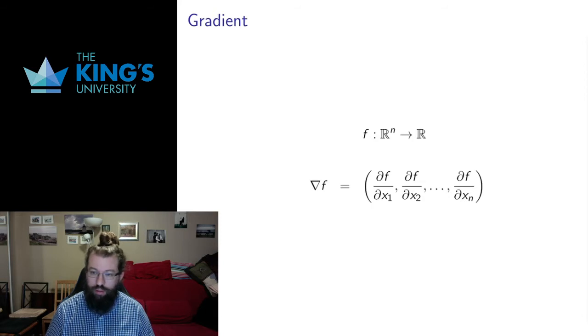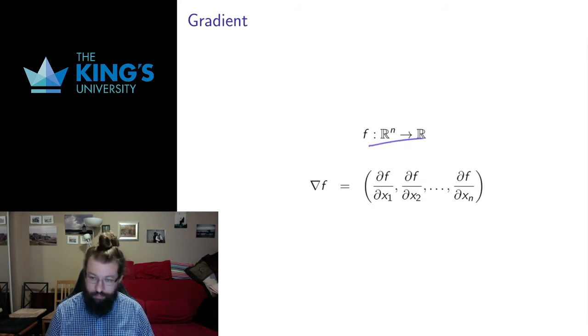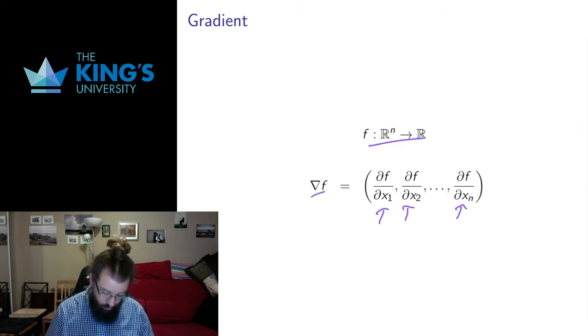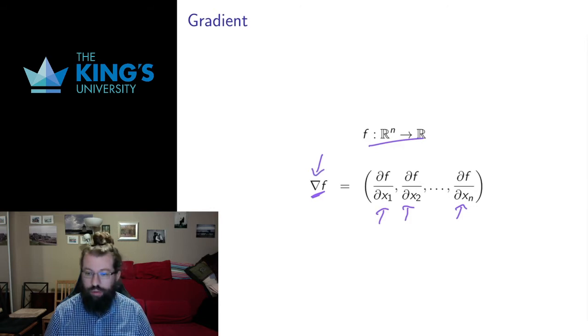The gradient does this by taking the vector of partial derivatives. So if I have a scalar field defined in R^n then I have partial derivatives in each of the variables of R^n. I can put those into a vector which I'm going to call the gradient and give this symbol. This little triangle thing is read as nabla so we call this nabla f.